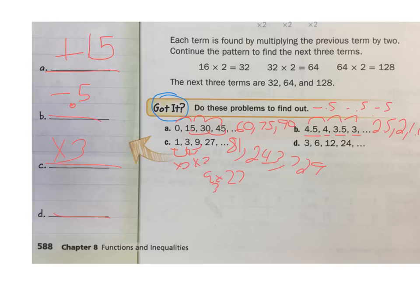Now let's look at D. 3, 6, 12, 24. Am I adding 3 each time? Nope. Looks like I'm multiplying. 3 times 2 equals 6, 6 times 2 equals 12, 12 times 2 equals 24. So it is times 2. And if I want the next 3, it's going to be 24 times 2, 48, 48 times 2 is 96, 96 times 2 is 192. So that's how you kind of find out your arithmetic and your geometric sequences.